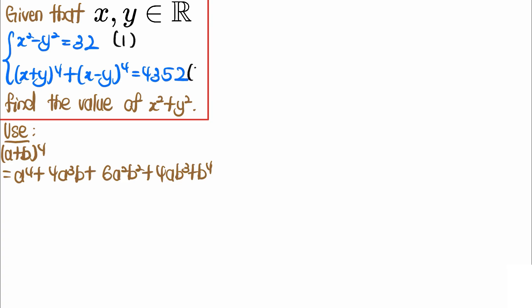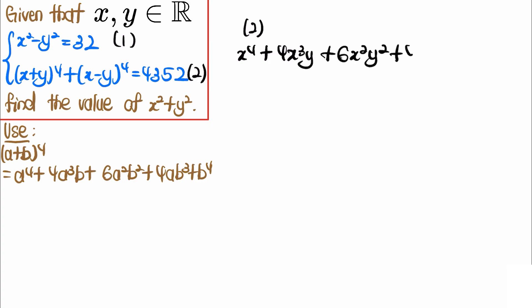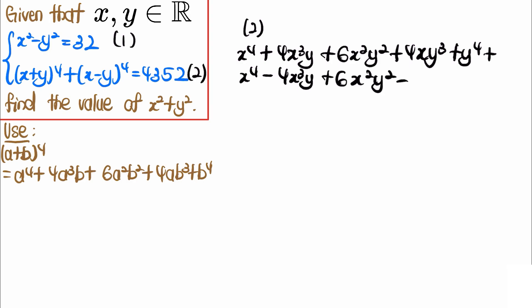Looking at the second equation, let's expand it out. Using the binomial expansion for (x+y)⁴, we get x⁴ plus 4x³y plus 6x²y² plus 4xy³ plus y⁴. For (x−y)⁴, it is the same except we change the sign for the x³y and xy³ terms because of the negative y. The whole thing equals 4352.